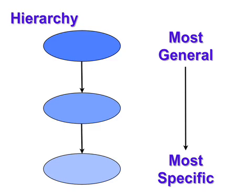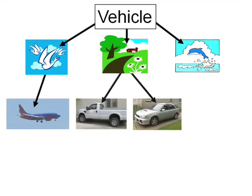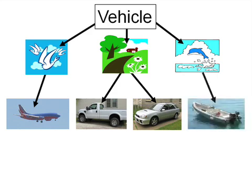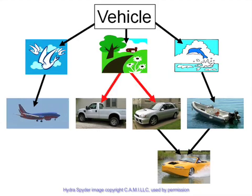For example, if we were going to construct a vehicle ontology, we would put the most general term vehicle at the top of the tree. Under that, we might include categories like air vehicle, land vehicle, and water vehicle. Then under those, an airplane would be an air vehicle, a truck and an automobile would be land vehicles, and a boat would be a water vehicle, but an amphibious vehicle would be both a land and a water vehicle. So you can see that the ontology tree goes from more general to more specific. In addition, a more general term can have multiple more specific child terms, and a child term can have multiple parents.